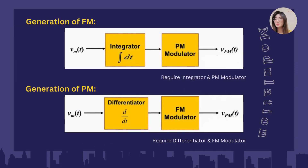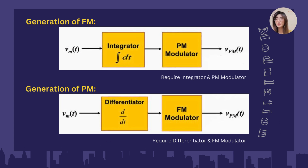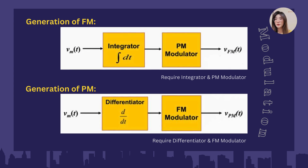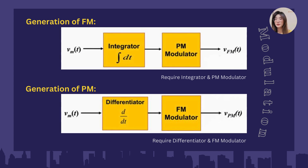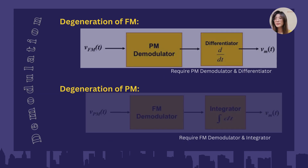This slide shows the modulation generation. There are two types: the generation of FM and the generation of PM. From the first diagram, we know that for the generation of FM, it requires an integrator and a PM modulator. While for the generation of PM, we require a differentiator and an FM modulator to produce PM.